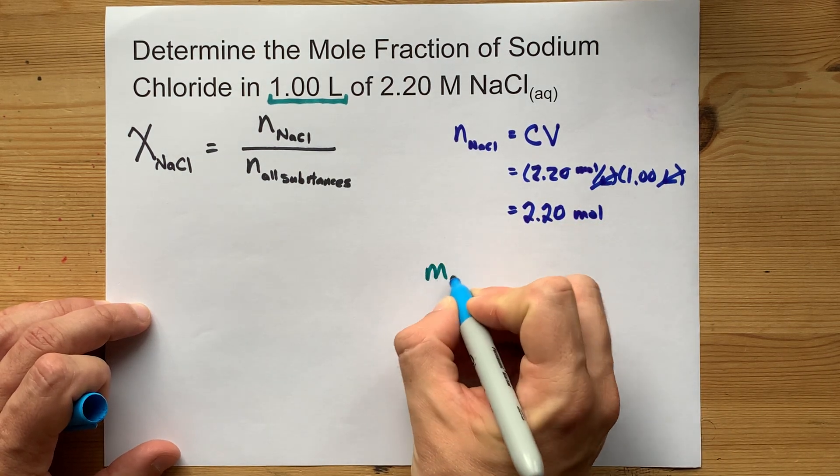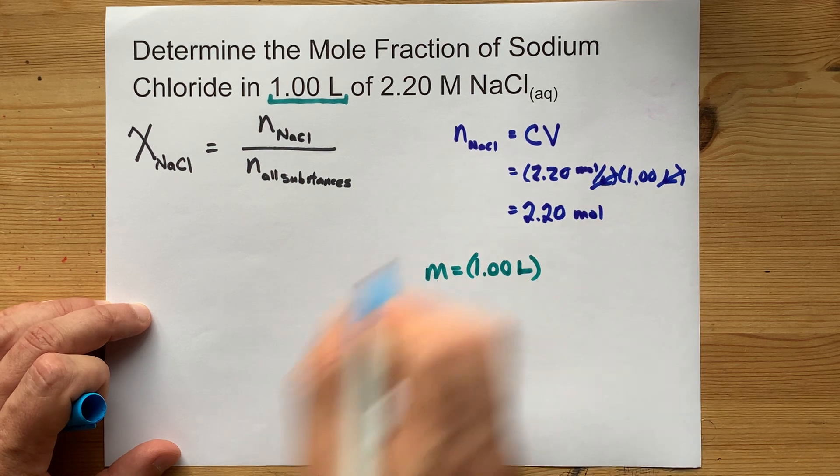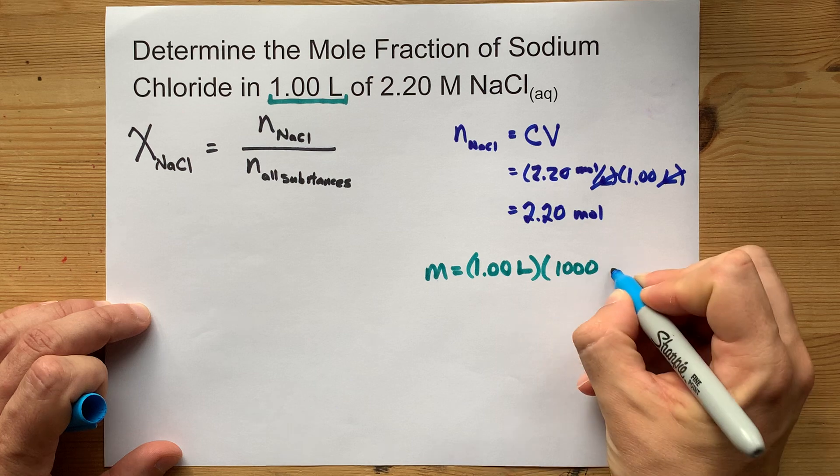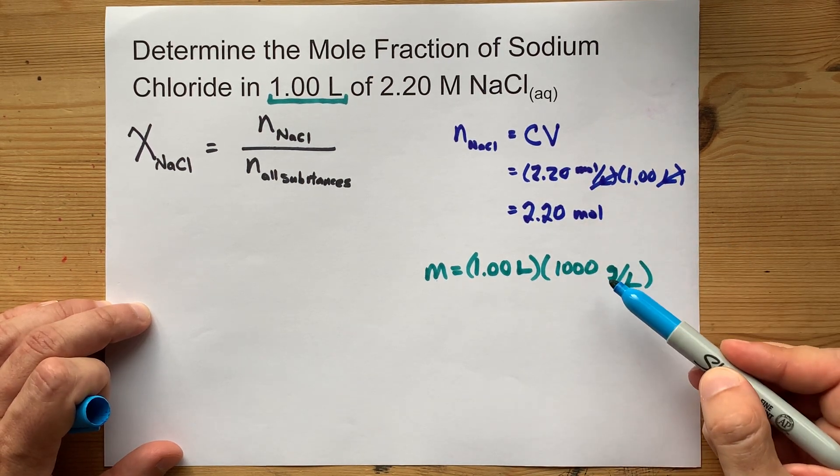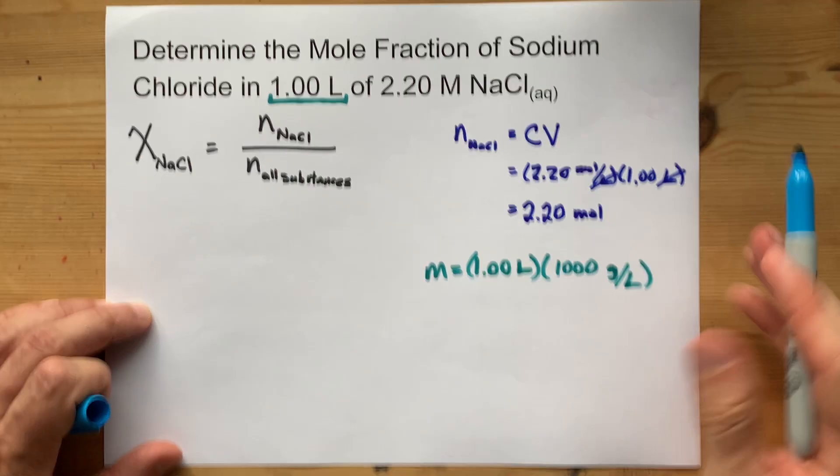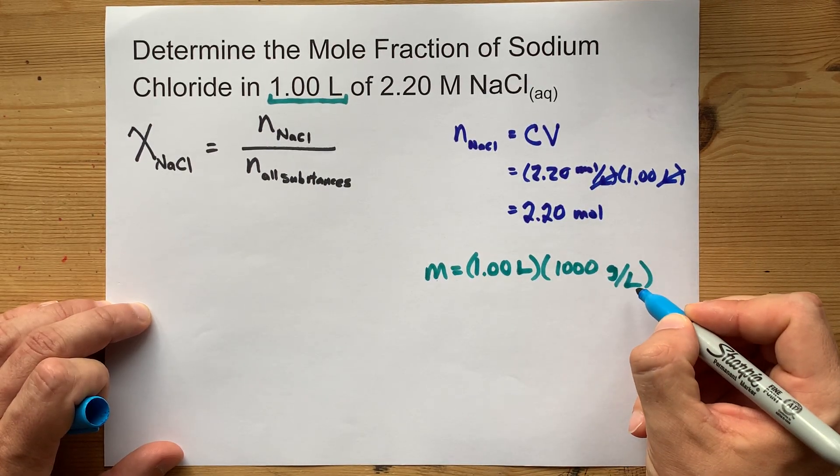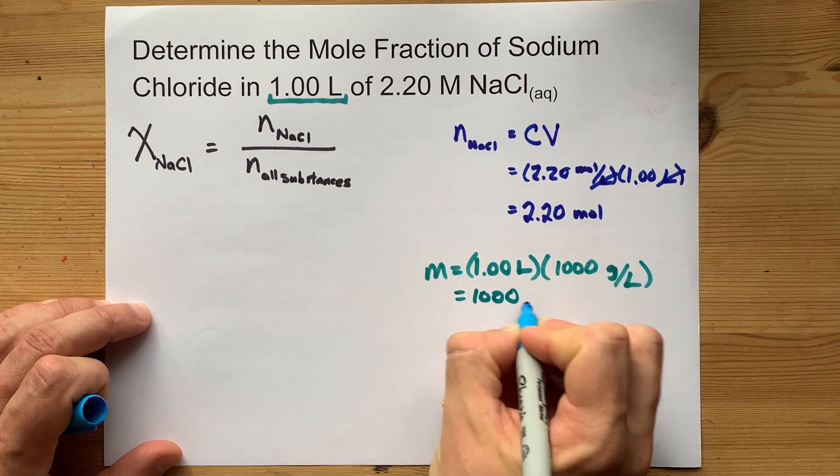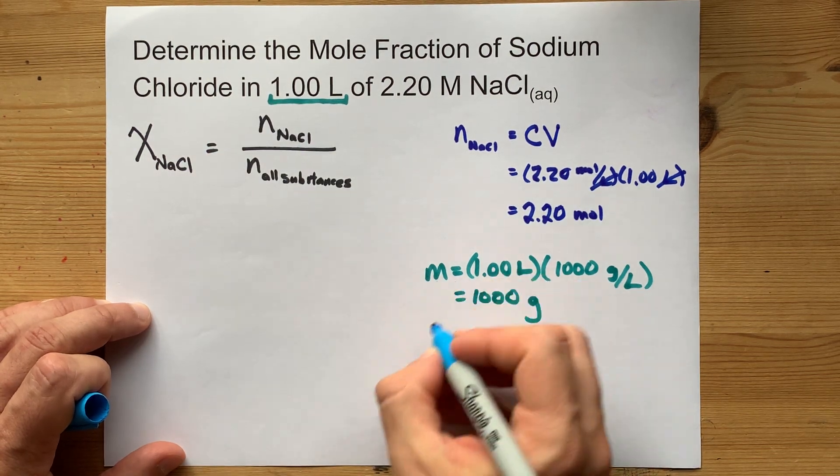So the mass of water that we have is that one liter times the fact that water weighs 1,000 grams per liter. By definition, one milliliter of water at about room temperature is one gram. So 1,000 milliliters is 1,000 grams. Well, that was easy then. It's 1,000 grams of water because it's a liter.